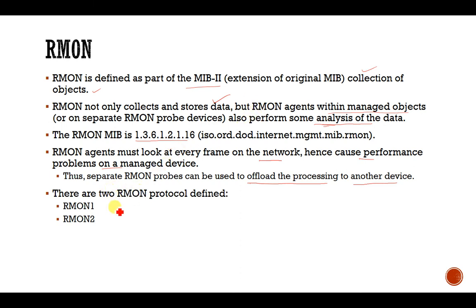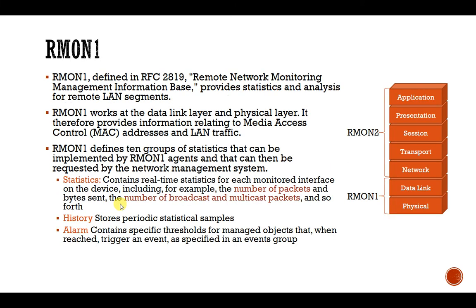There are two versions of RMON defined: RMON 1 and RMON 2. Let us first discuss RMON 1. The difference between RMON 1 and RMON 2 is according to the network layers. They store data according to layered objects — meaning at each layer, what are the objects and how they are statistically analyzed and stored in the database.